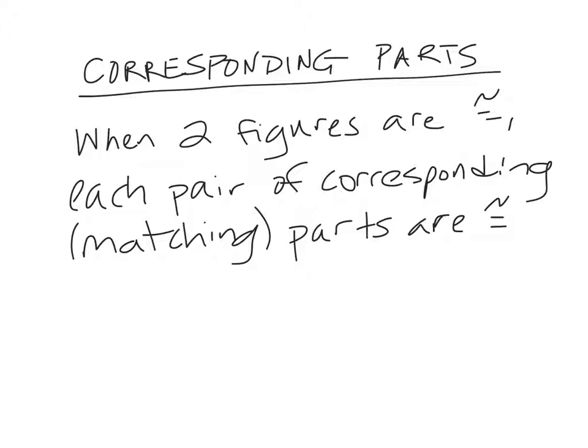Corresponding parts basically means matching parts. And when you have two figures that are congruent, each pair of corresponding or matching parts are congruent. That means if I have two triangles that are congruent, the corresponding angles are congruent, and the corresponding sides are congruent.